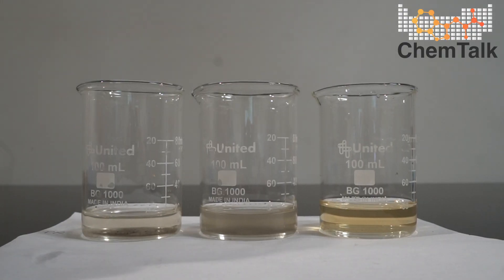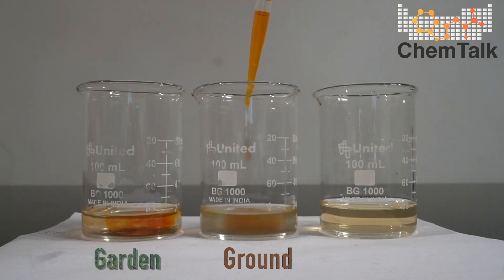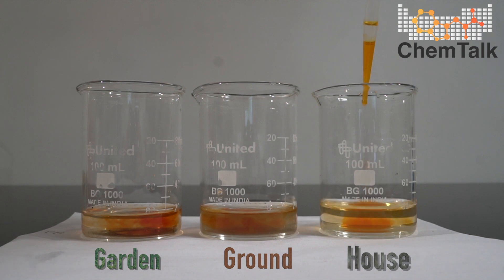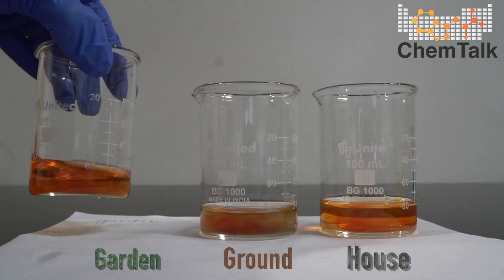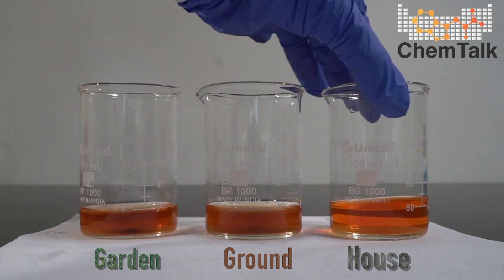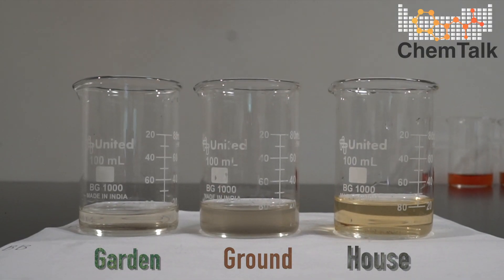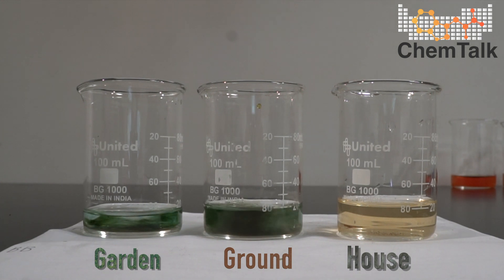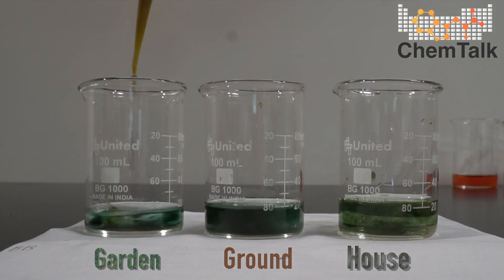All right. So first I'm adding the phenol red indicator to the garden soil, ground soil, and from my house. Shake it around a little bit. So we will let that settle for a bit. And let's move on to the bromothymol blue. All right. So now we're going to add the bromothymol blue. Garden soil, ground soil, soil from home.